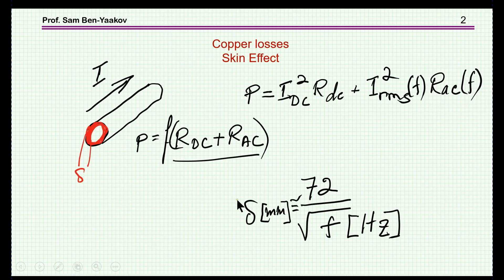The total resistance is actually split into two resistances: one for the DC, which is dependent on the cross section area of the wire, the total cross section, while there is an RAC in which we have only this area here. Obviously, the area here is smaller.